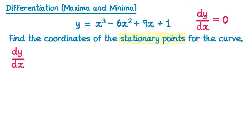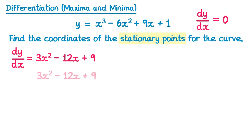For this curve, dy by dx: we've got x cubed, so differentiating that gives 3x squared. Differentiating negative 6x squared gives negative 12x. Differentiating plus 9x gives plus 9, and the plus 1 constant differentiates to give 0. So we know this must equal 0, giving us 3x squared minus 12x plus 9 equals 0, and then we solve this equation.